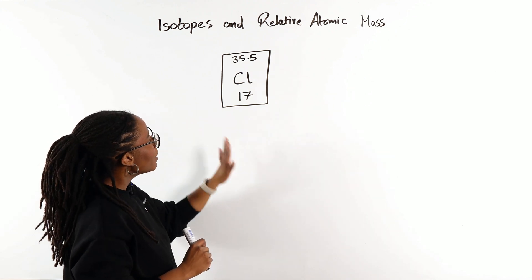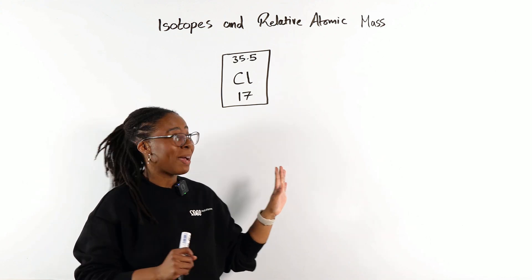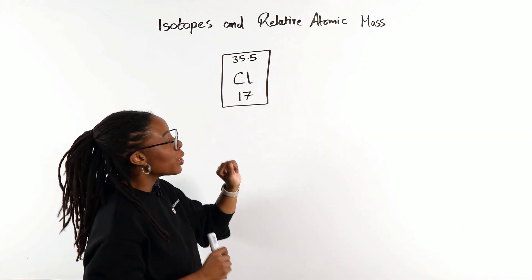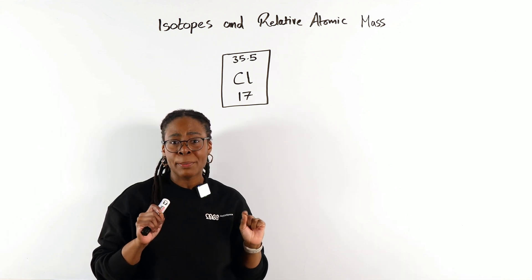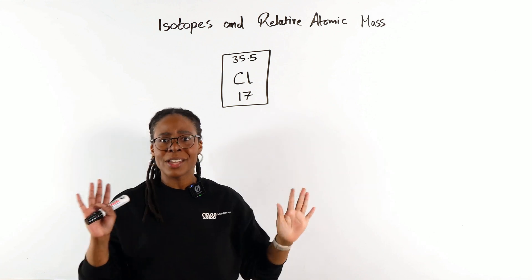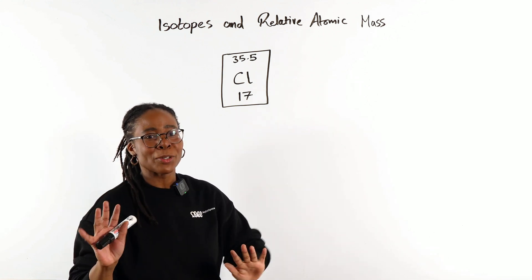The element that we typically look to when we're talking about relative atomic mass is chlorine. That's because if you look at your GCSE periodic table, which I know is a poster on your wall, it's your screensaver...